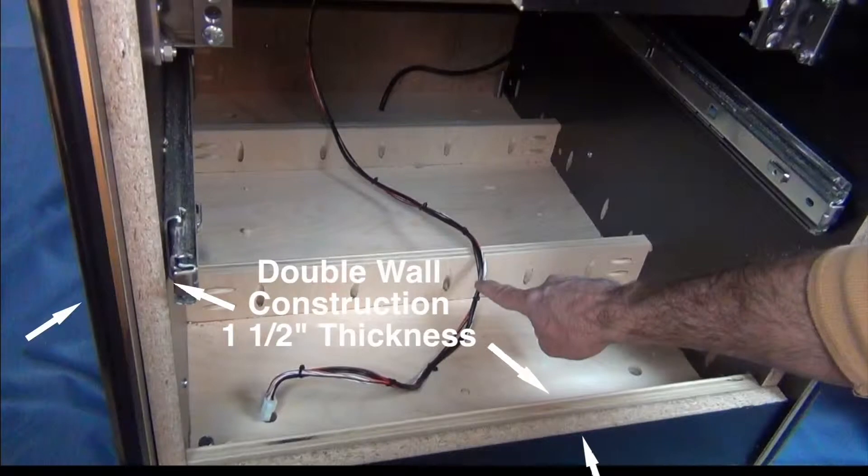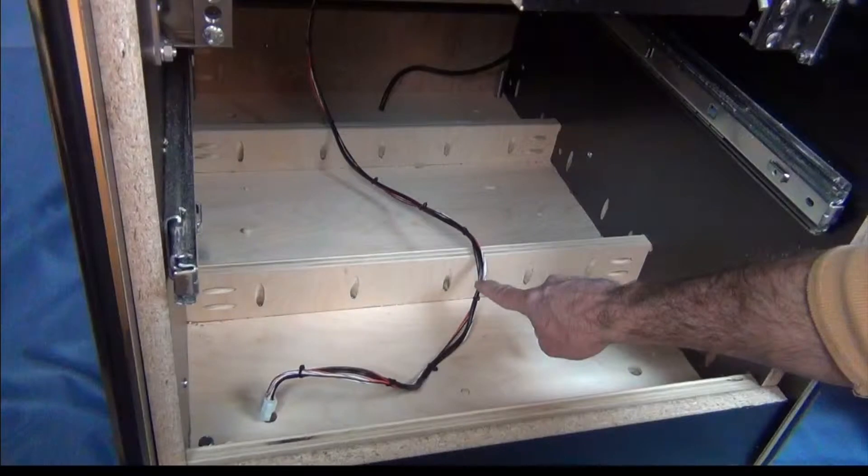Our pusher has double wall construction, giving the frame one and a half inches of thickness that dramatically increases its weight, stability, and strength.